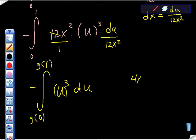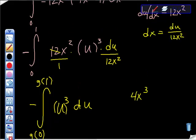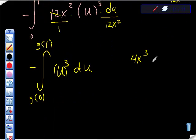which was 4x³ minus 1. So I'm going to do that, I'm going to take g(0). g(0) is 4 times 0³ minus 1, which is equal to negative 1, isn't it?